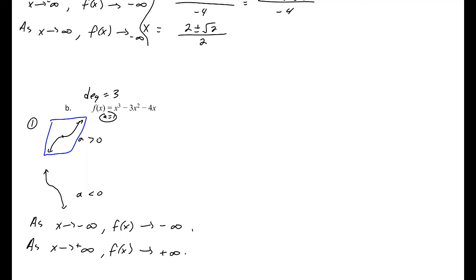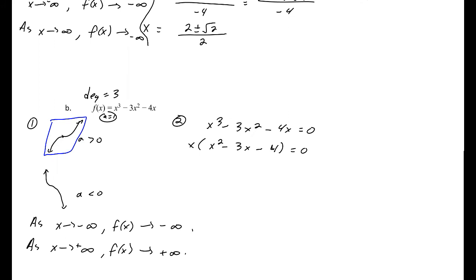To find the zeros, set x³ − 3x² − 4x = 0 and factor out x: x(x² − 3x − 4) = 0. That quadratic factors as (x + 1)(x − 4), giving zeros at x = 0, x = −1, and x = 4. This is a cubic, so it can have up to three solutions — and here we have exactly three x-intercepts.